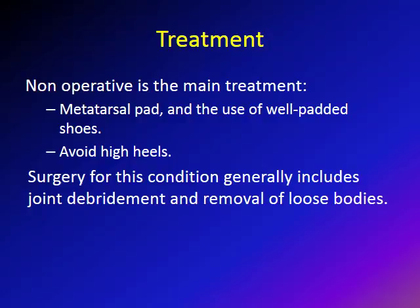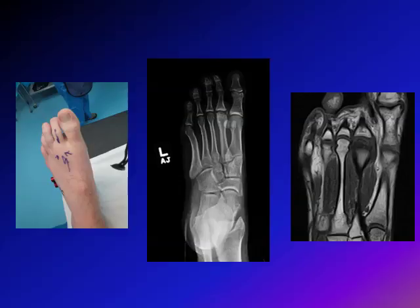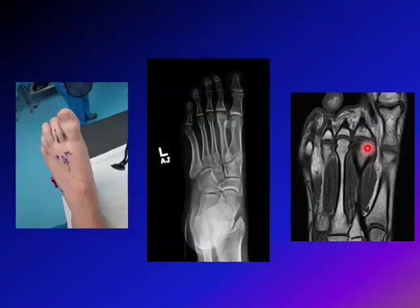Surgery involves removing the loose body from the joint. This is one of the rare cases that needs surgical treatment — a 14-year-old patient with swelling over the base of the second toe for about one year. The X-ray shows fragmentation of the head of the second metatarsal. On MRI, there is a change in the signal of the metatarsal head, collapse of the metatarsal head and joint, and loose fragments. After a long discussion with this patient, he was a candidate for removal of these loose fragments.